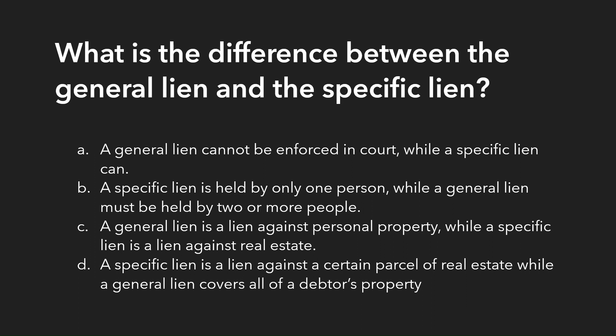Question two: What is the difference between a general lien and a specific lien? Options: A, a general lien cannot be enforced in court while a specific lien can; B, a specific lien is held by only one person while a general lien must be held by two or more; C, a general lien is against personal property while a specific lien is against real estate; D, a specific lien is against a certain parcel while a general lien covers all of the debtor's property. Think about the words: specific means targeting one thing, general means many things. The answer is D.